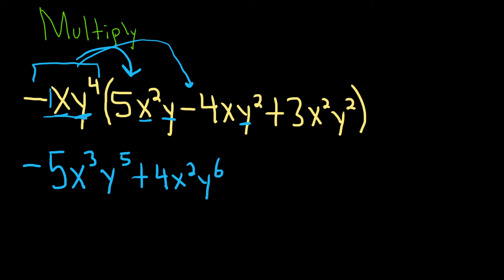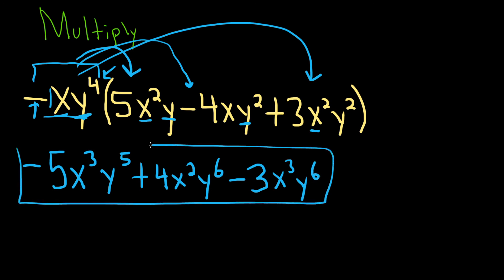And the last piece would be this piece here times this piece out here. So we'll get a negative 3. That's because there's a negative here. And x times x squared will give us x cubed. And y to the 4th times y squared, we'll add the exponents there. And that will give us y to the 6th. And that will be the final answer.